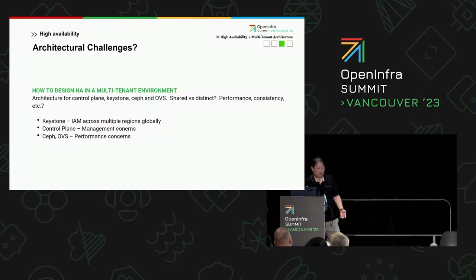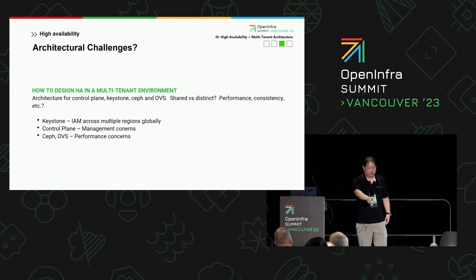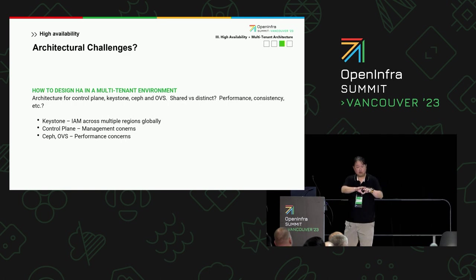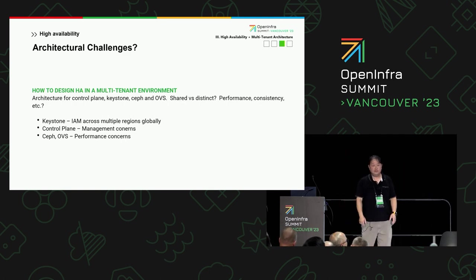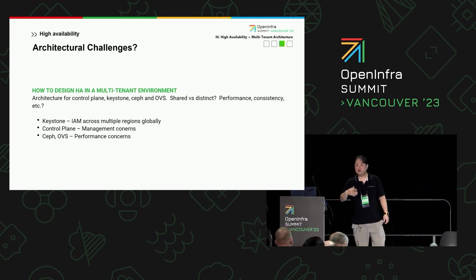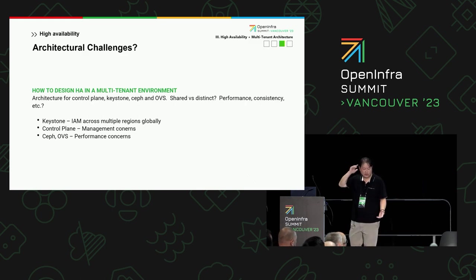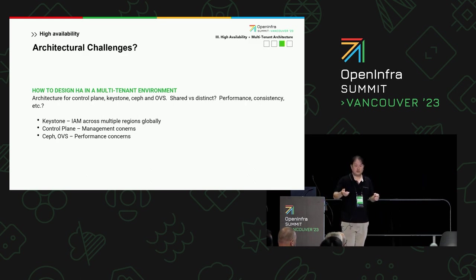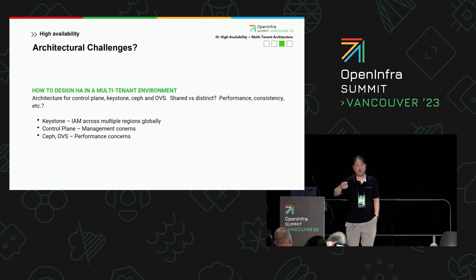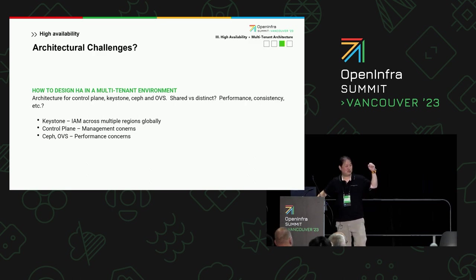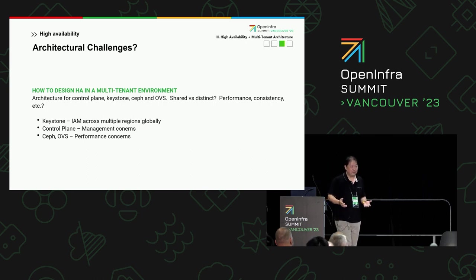The architecture challenges I'm primarily talking about are three major areas. One is around identity — Keystone. How do you manage logins, identity, and access management across this type of global infrastructure? What do we do with the OpenStack control plane — how can we run it across different global areas? Things like Ceph and OVS also have performance constraints. If you're running off a data source that's far away but your workloads are running locally, it might be easier to manage in some ways, but performance will probably be pretty bad, which customers won't be happy about. We've explored a few options.